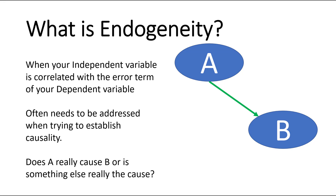Oftentimes you'll hear this term thrown around in regards to: is your model actually viable? Is there a problem with indigeneity? In essence, does your independent variable really truly influence your dependent variable, or is there something else causing it? This indigeneity usually arises because your independent variable in your model is oftentimes correlated with the error term of your dependent variable.